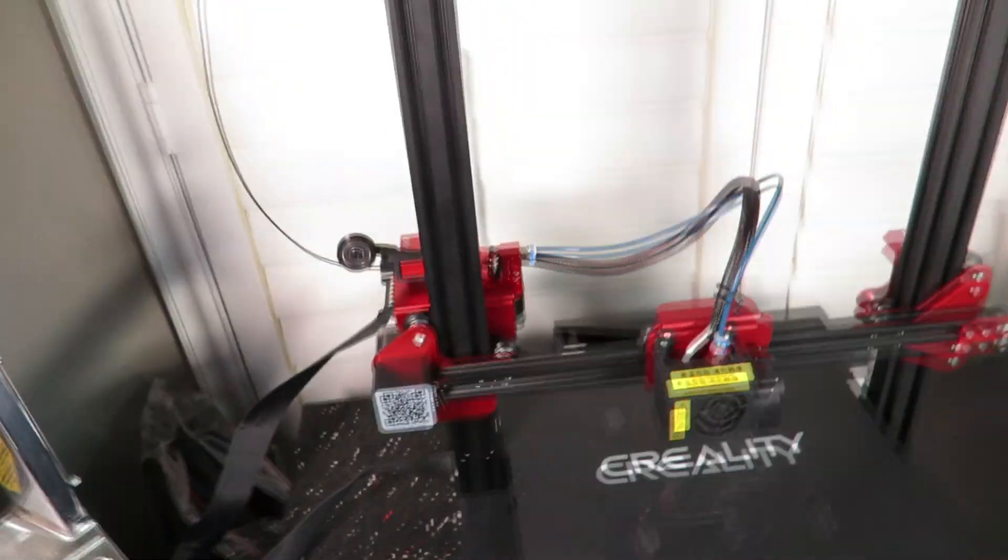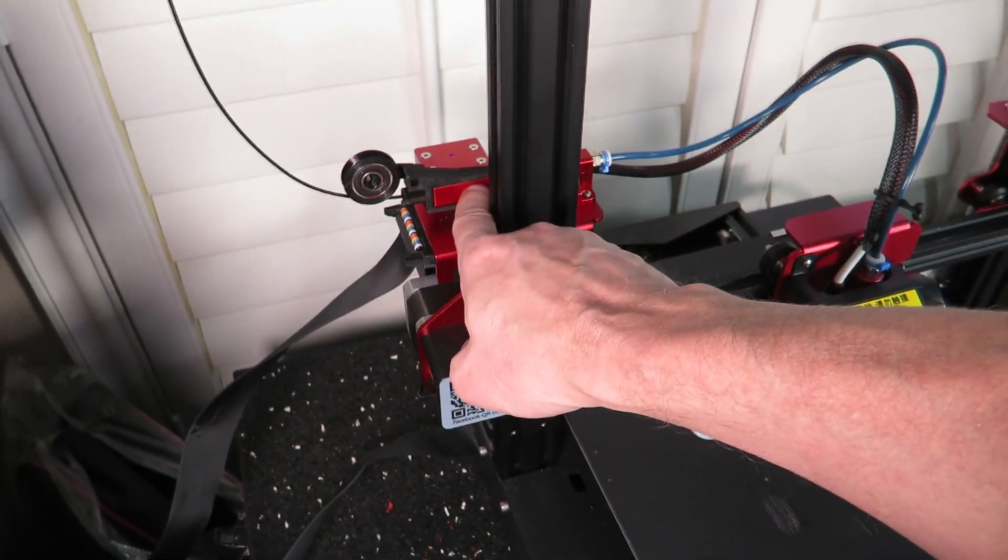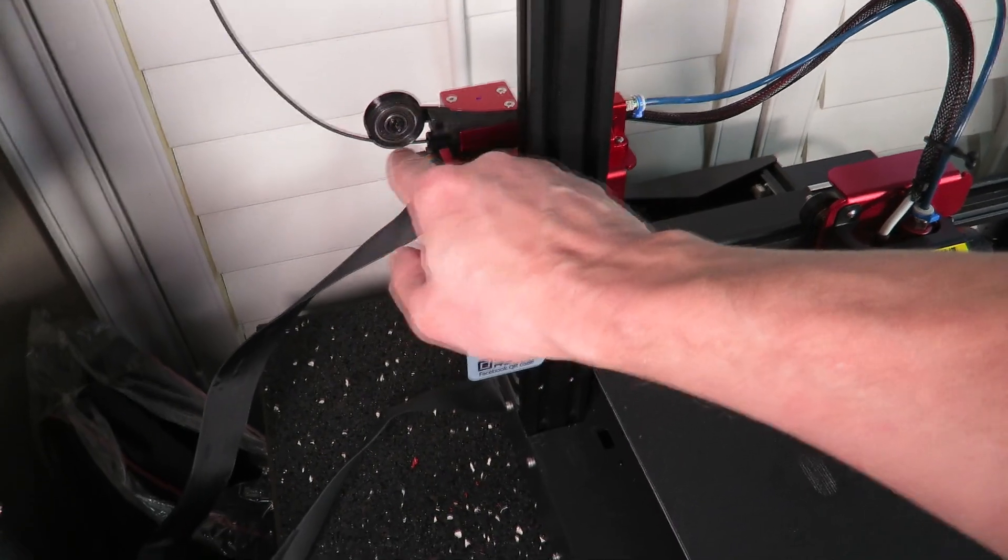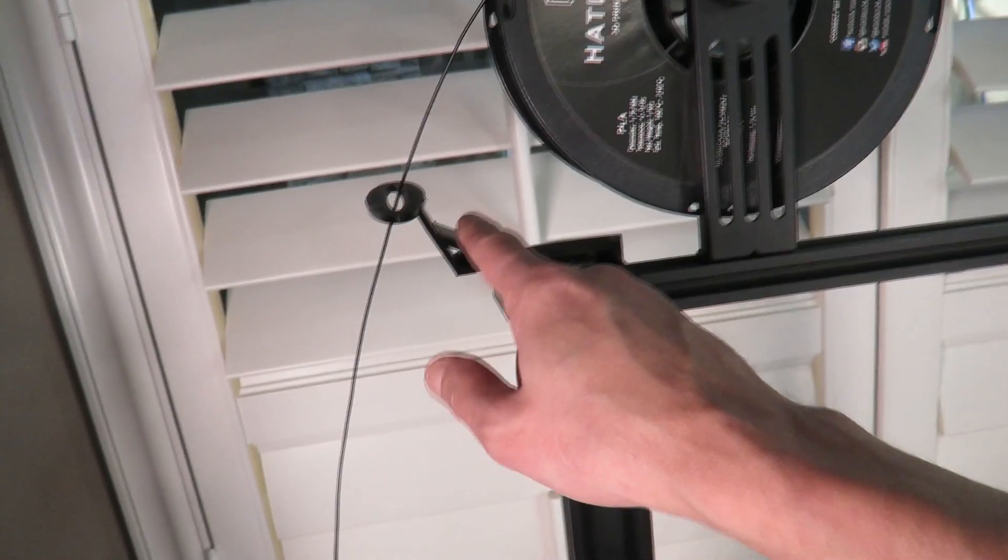Once you do that, you can mount it right here onto your sensor block. And you've got your nice pulley there. And then your other bracket here.